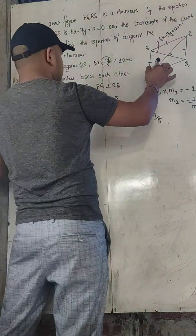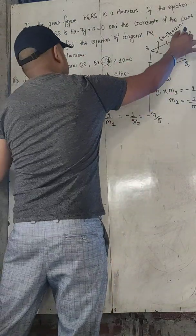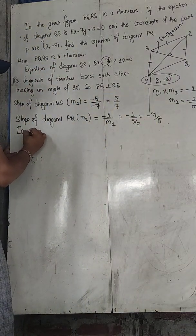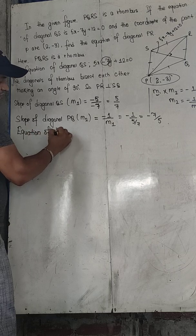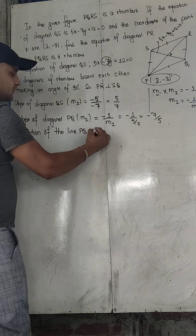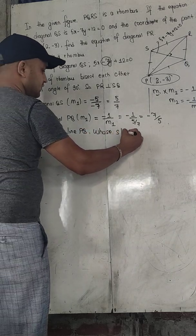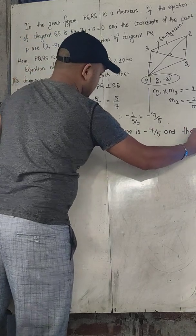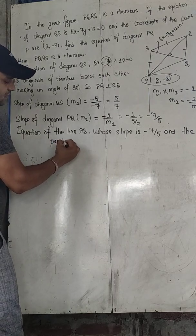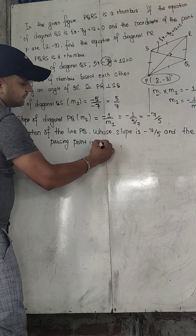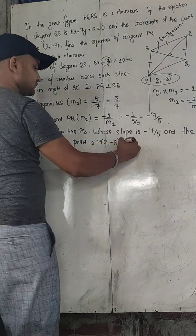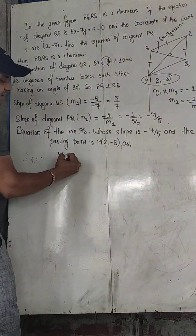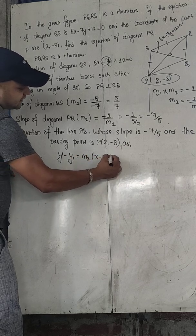This is the slope of line PR, which is minus 7 by 5. We also have the passing point (2, minus 3). So we can find the equation of line PR. The equation of PR has slope minus 7 by 5 and passes through (2, minus 3). The formula to use is Y minus Y1 equals M2 times X minus X1.